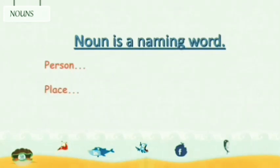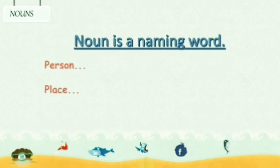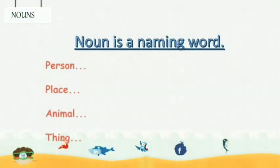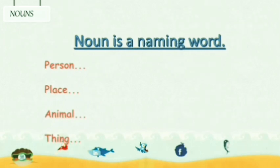Then, it can be a name of a place. Children, you live in Chennai, right? It's a name of a place, so this is also called a noun. And then, it can be a name of an animal — for example, cat, dog, lion, and so on. Finally, it can be a name of a thing. What are the things you have in your home, children? List out those things. For example, table, fan, television. All in the list are called nouns.